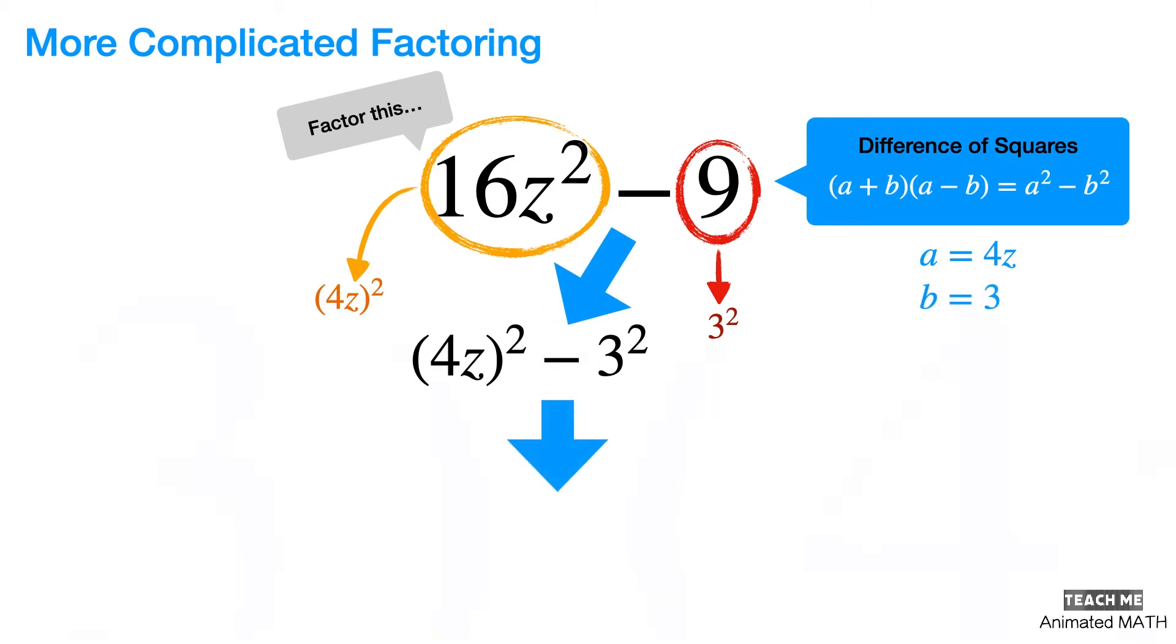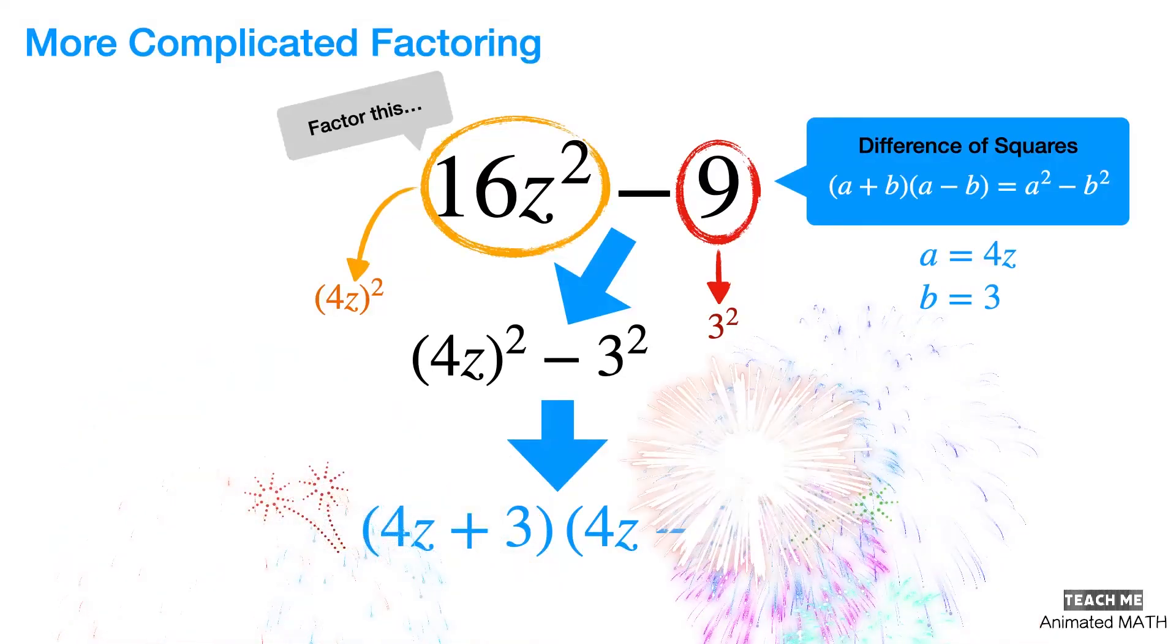Let's rewrite the expression. And it is over! The factors of 16z squared minus 9 are 4z plus 3 and 4z minus 3. Congratulations! You have now experienced your very first complicated factoring.